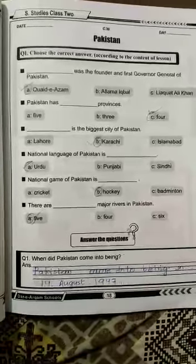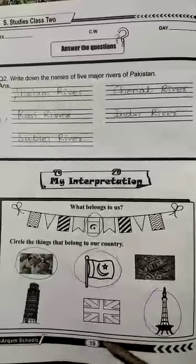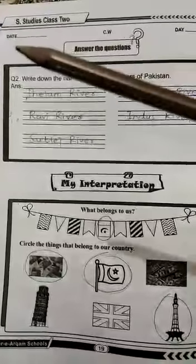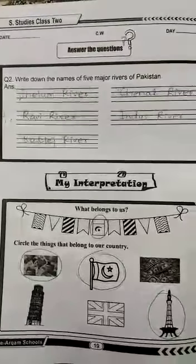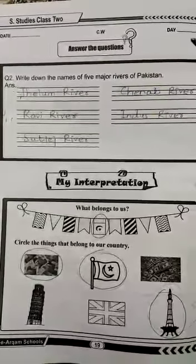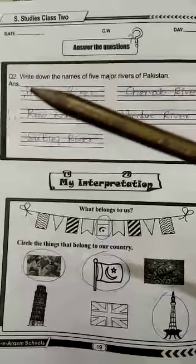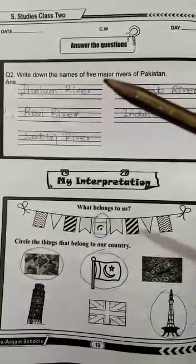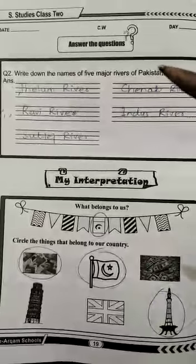Okay, now turn the page. Open page number 19. Mention the date and day of today. Question number 2: Write down the names of 5 major rivers of Pakistan.